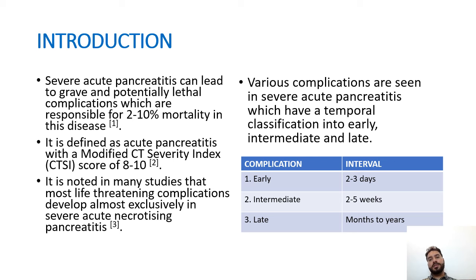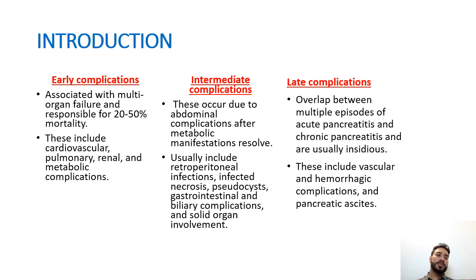Various complications are seen in severe acute pancreatitis, which have a time-based temporal classification into early, intermediate, and late. Early complications are seen in 2-3 days, intermediate at 2-5 weeks, and late complications in months to years after the acute episode. Early complications associated with multi-organ failure are responsible for 20-50% of mortality, and include cardiovascular, pulmonary, renal, and metabolic complications such as changes in calcium and LDH levels. These are mostly biochemical markers.